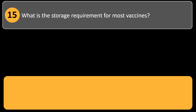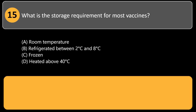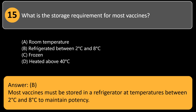What is the storage requirement for most vaccines? A) room temperature, B) refrigerated between 2°C and 8°C, C) frozen, D) heated above 40°C. Answer: B. Most vaccines must be stored in a refrigerator at temperatures between 2°C and 8°C to maintain potency.